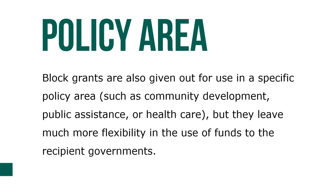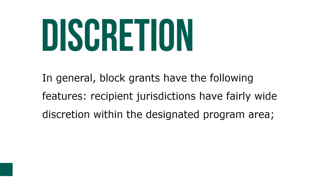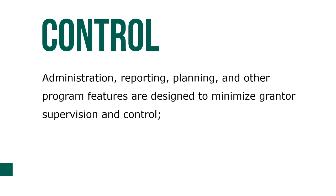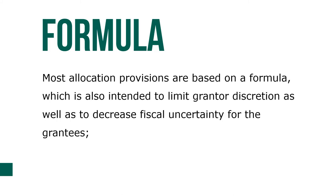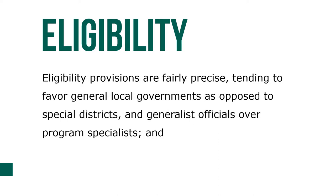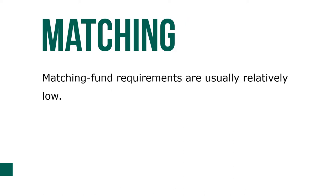Block grants are given for use in a specific policy area — such as community development, public assistance, or health care — but leave much more flexibility for the use of funds to recipient governments. In general, block grants feature fairly wide discretion within the designated program area, administration and reporting designed to minimize grantor supervision and control, allocation provisions based on a formula intended to limit grantor discretion and decrease fiscal uncertainty for grantees, and eligibility provisions that tend to favor general local governments and generalist officials over program specialists, with relatively low matching fund requirements.